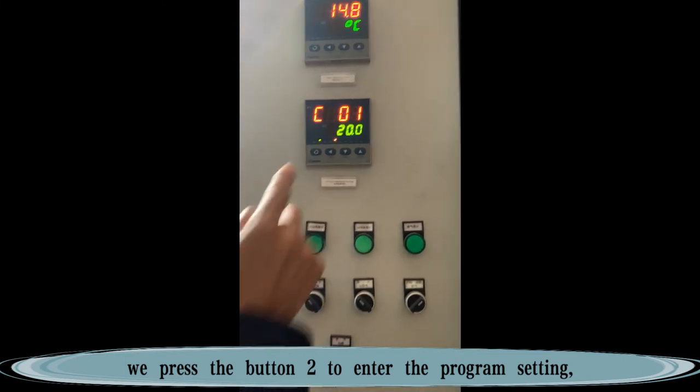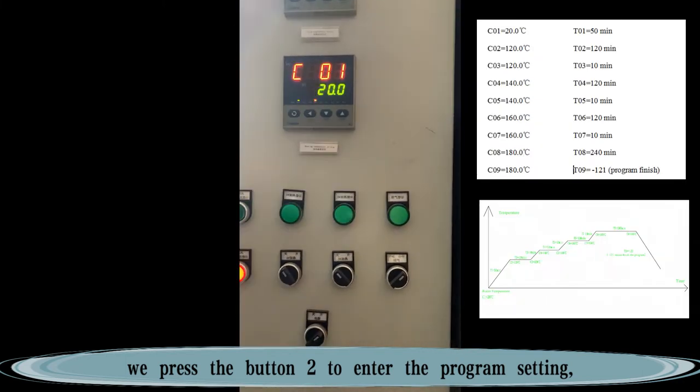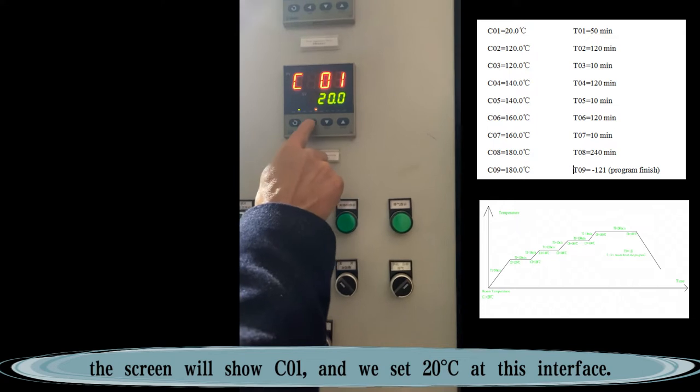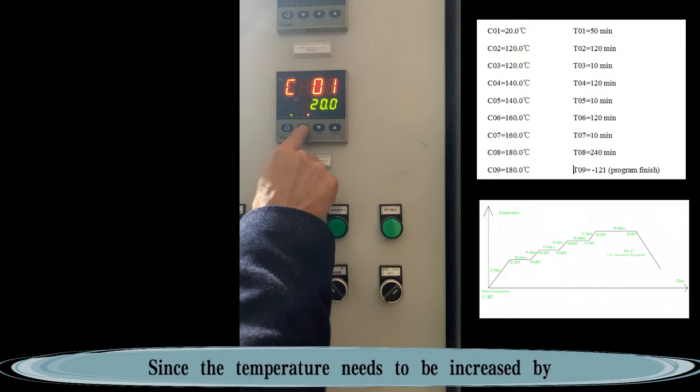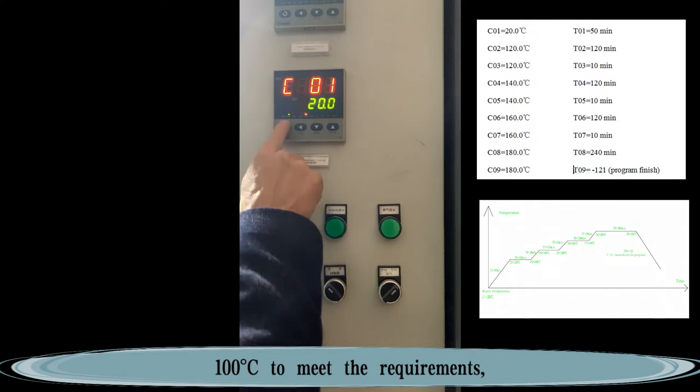We press button 2 to enter the program setting. The screen will show CO1 and we set 20 degrees Celsius at this interface. Since the temperature needs to be increased by 100 degrees Celsius to meet the requirements, the required heating time is about 50 minutes.